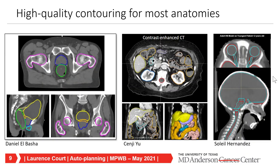Does that mean it will always work? The answer is no. Soleil Hernandez applied deep learning and automated planning to pediatric cases, taking DJ Ree's head and neck auto contouring tools and applying them to children. In many cases they worked, but sometimes they didn't—for brainstem, chiasm, and optic nerves, it wasn't quite right. So you do sometimes need to create new models. These tools are getting really good, but there are situations where you have to be careful.